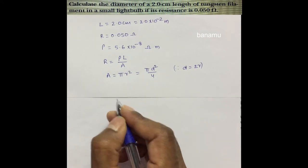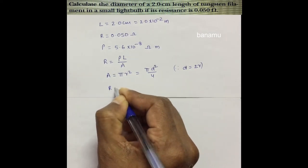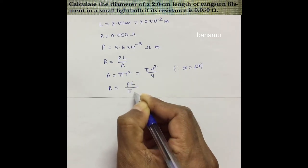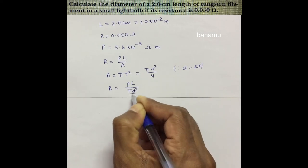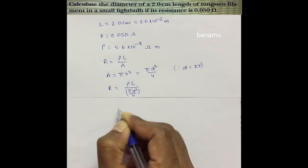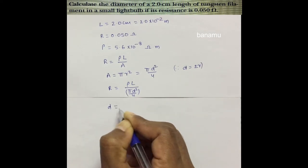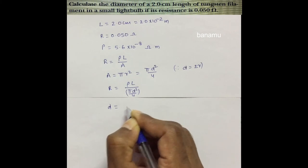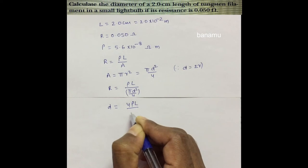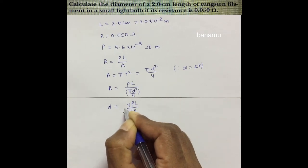Substituting the area into the resistance equation: R is equal to rho L divided by pi d squared by 4. Cross multiplying, the diameter of the filament D is equal to the square root of 4 rho L divided by pi R.